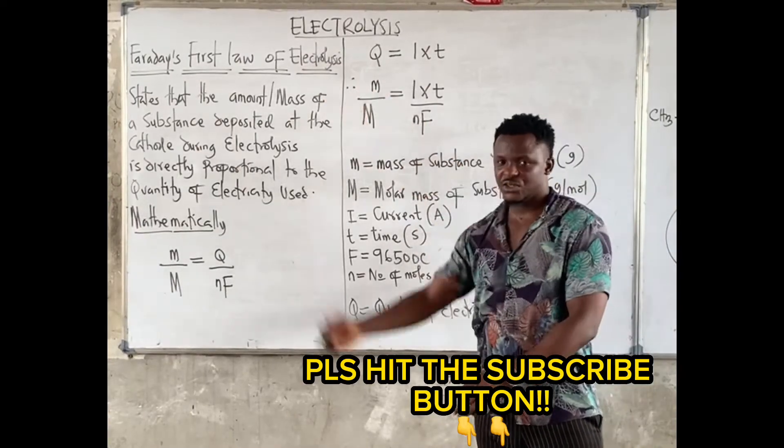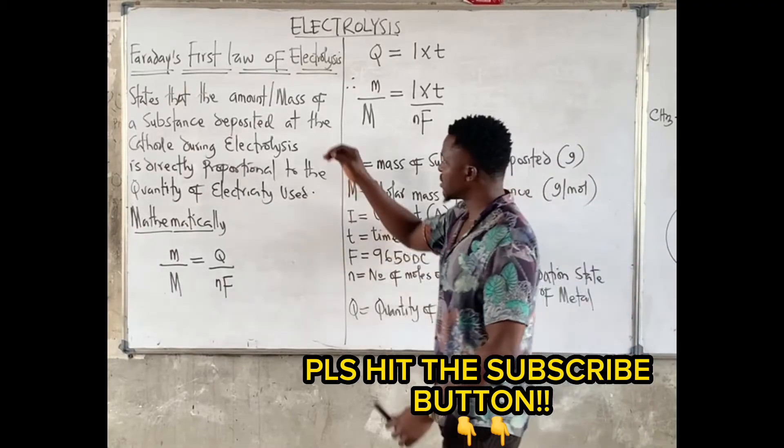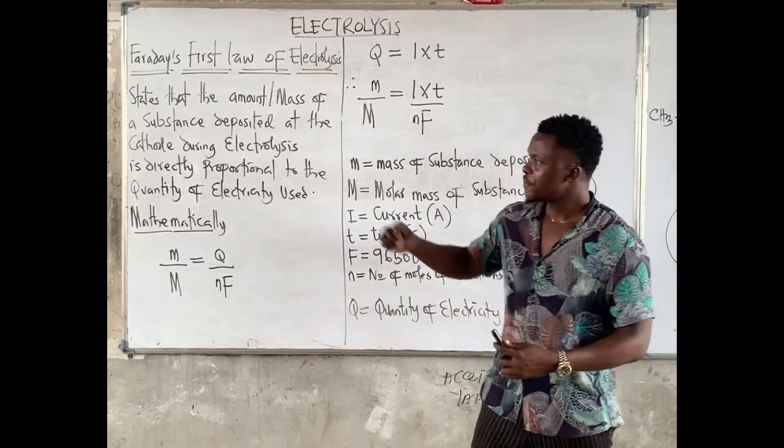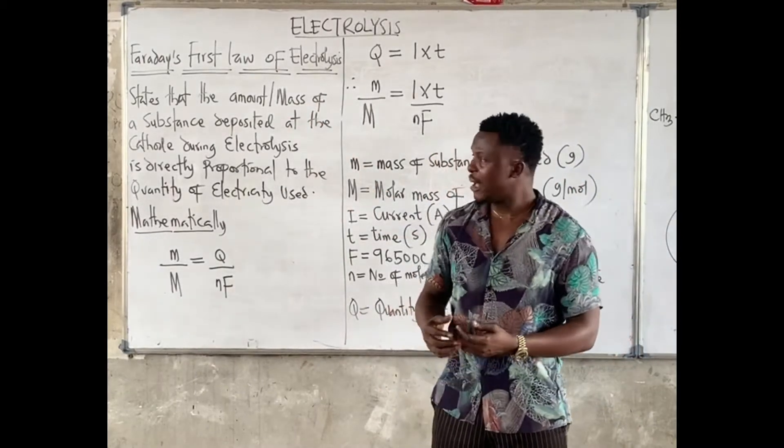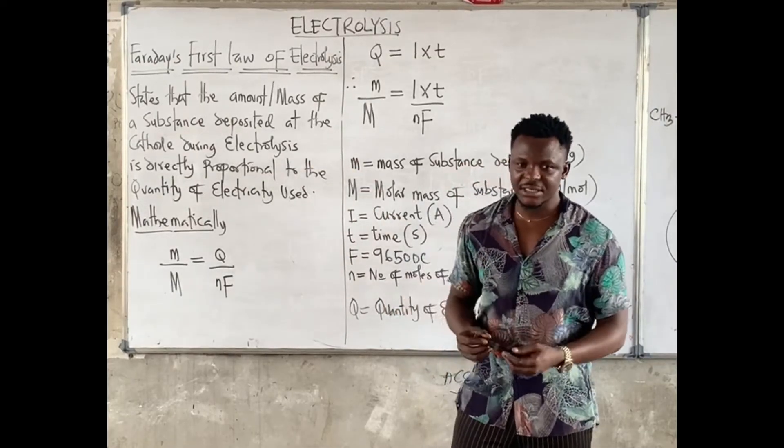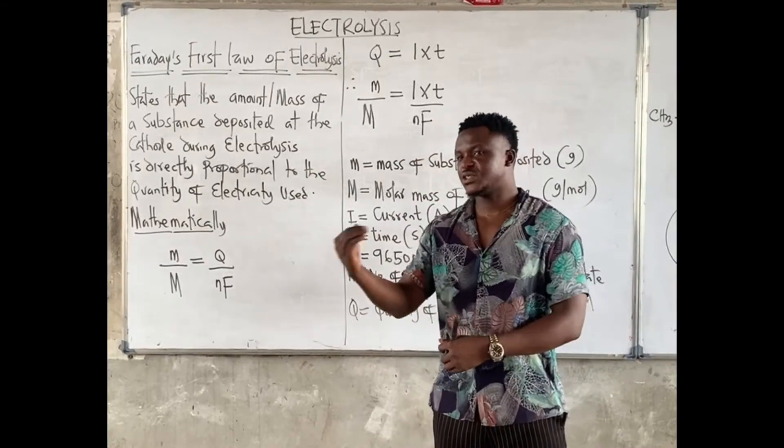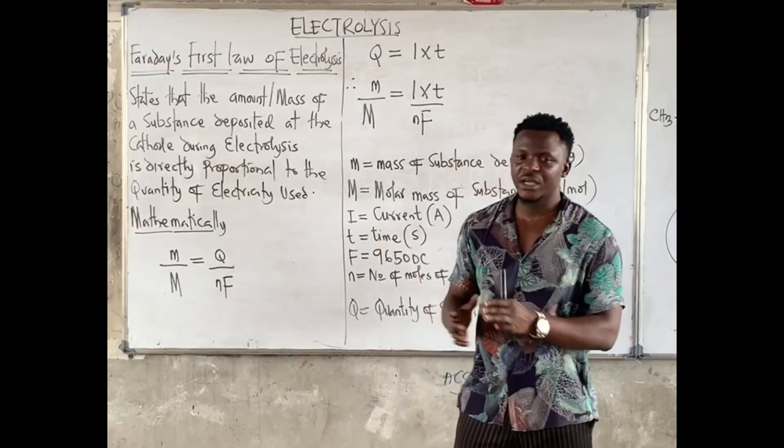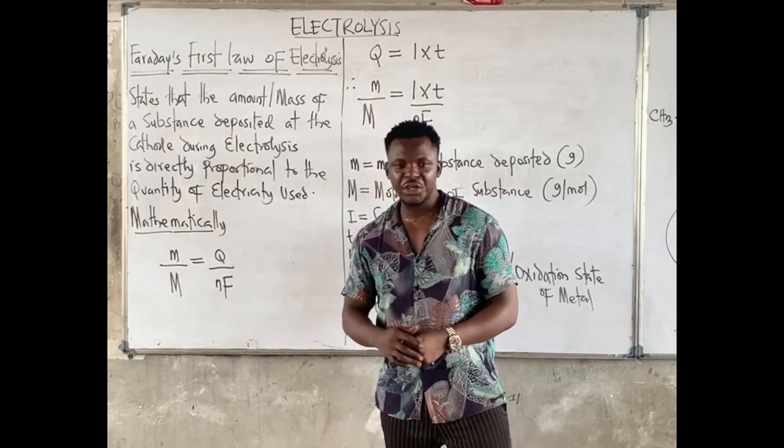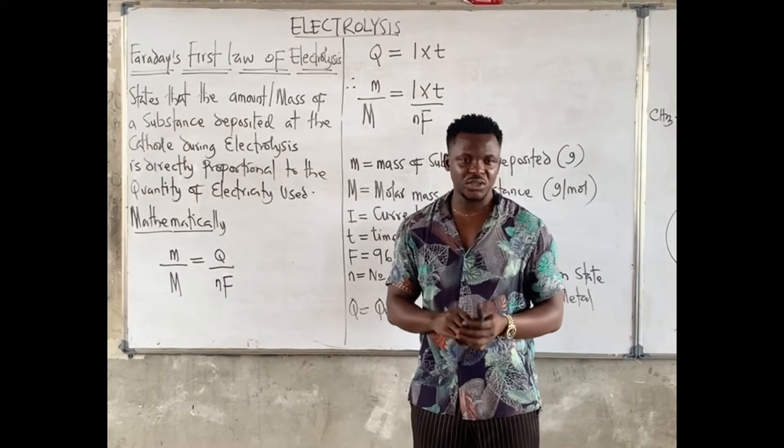Now we have Faraday's laws of electrolysis. We have the first law and we have the second law. However, we are going to be focusing on Faraday's first law of electrolysis. We state that the amount of mass of the substance deposited during electrolysis is directly proportional to the quantity of electricity passed. This formula here is actually going to help us to carry out any calculations as far as the first law is concerned.